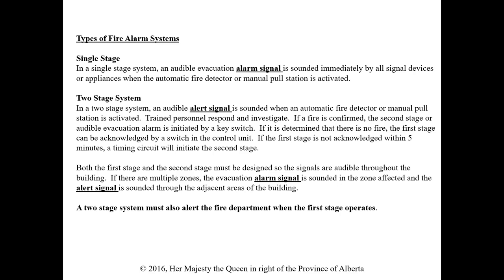In a two-stage system, trained personnel with a key can go to the pull station that was triggered and use the key switch to acknowledge the alert. If it's determined there is no fire, the first stage can be acknowledged by that switch. If the first stage is not acknowledged within five minutes, a timing circuit will automatically initiate the second stage — the full alarm — so if nobody is available to address it, everyone evacuates.